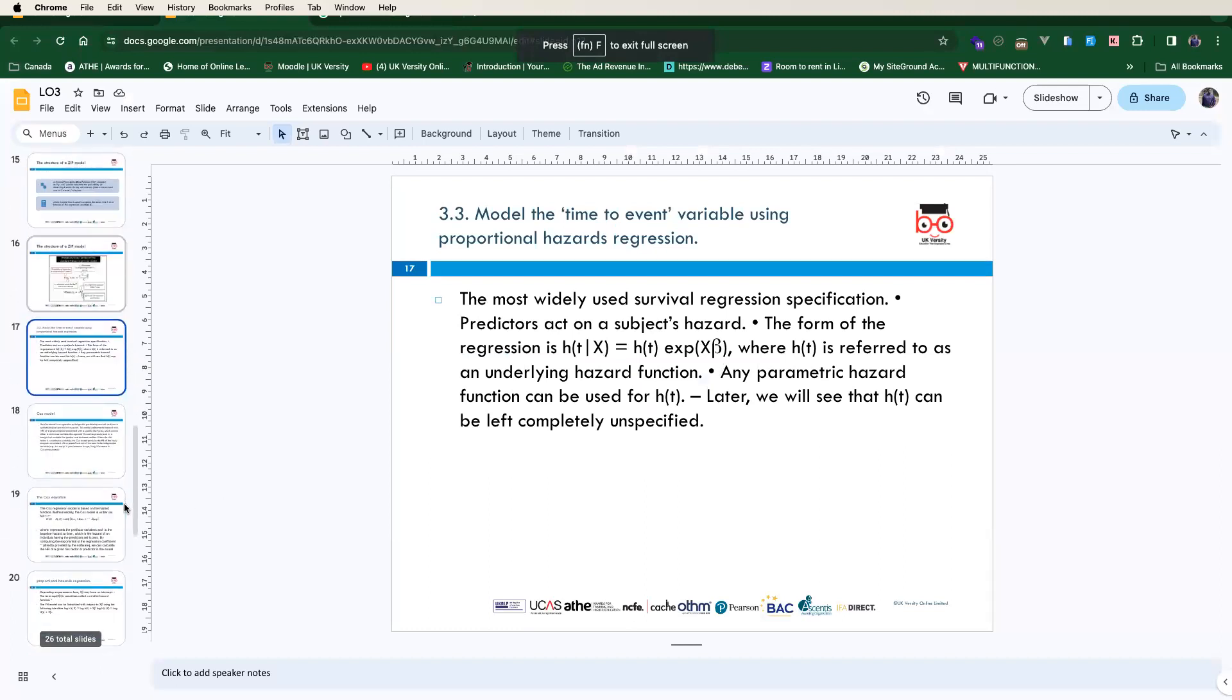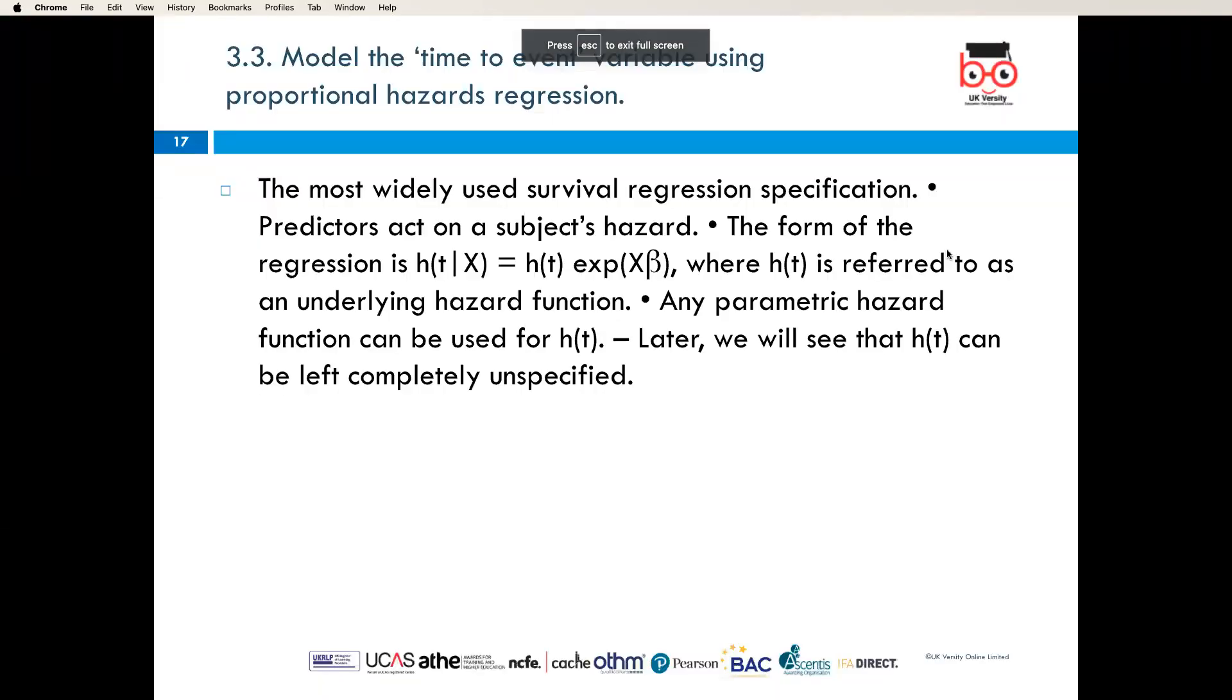The next topic is model the time to event variable using proportional hazard regression. The most widely used survivor regression specification is where predictors act on a subject's hazard. The form of the regression is the formula shown, where the formula is referred to as an underlying hazard function. Any parameter hazard function can be used for h(t). Later we will see that h can be left completely unspecified.